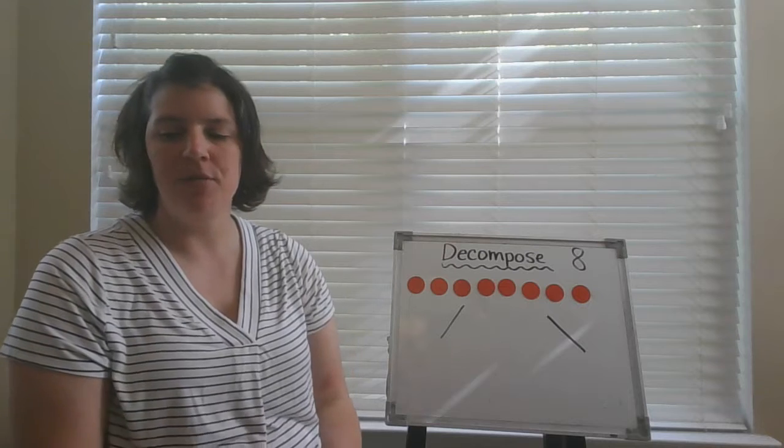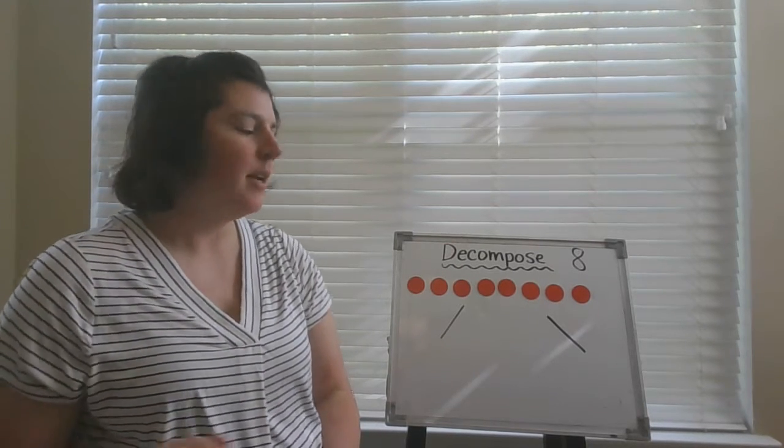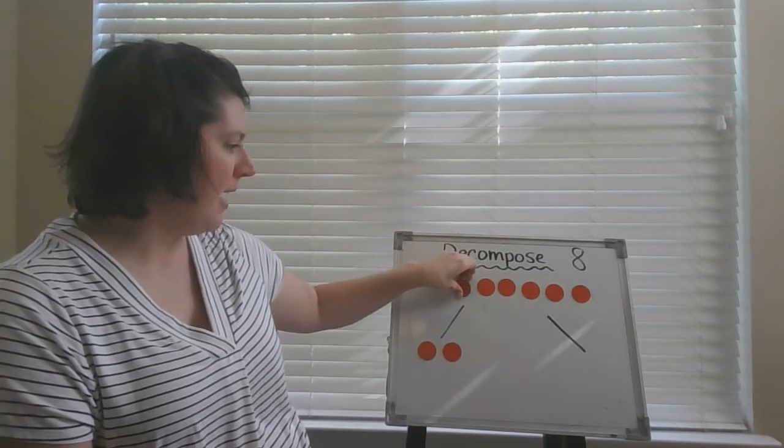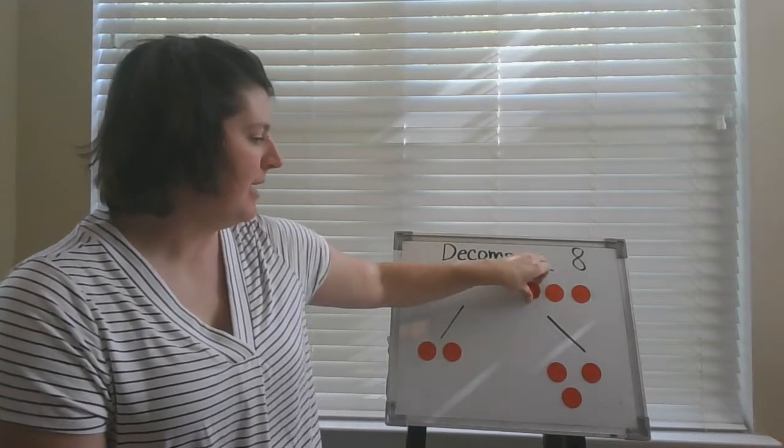So let's think of some of the ways you might have shown eight in two groups or parts. Let's see, I can move my magnets. If I move two to this side, how many will I have on the other side? Let me count and see.